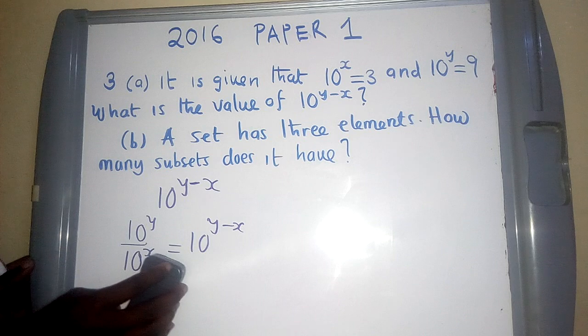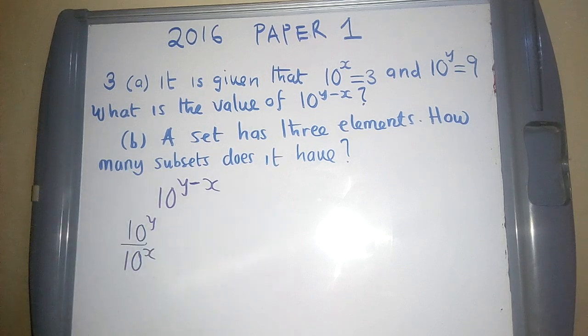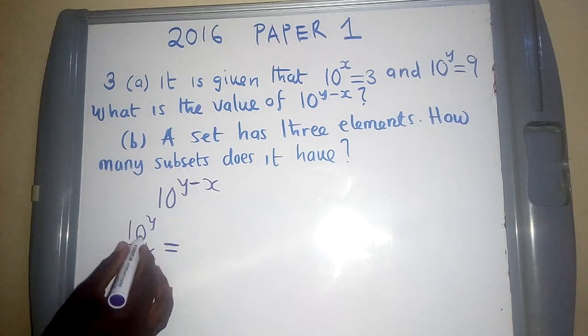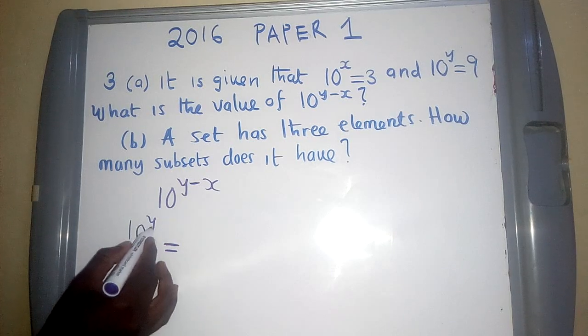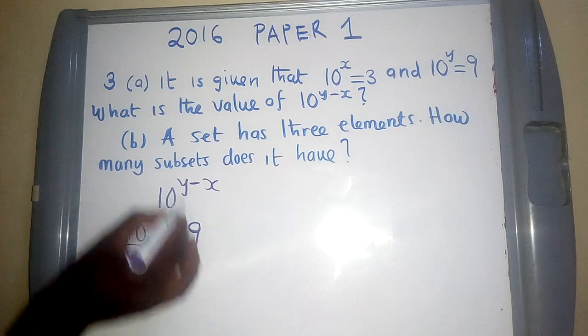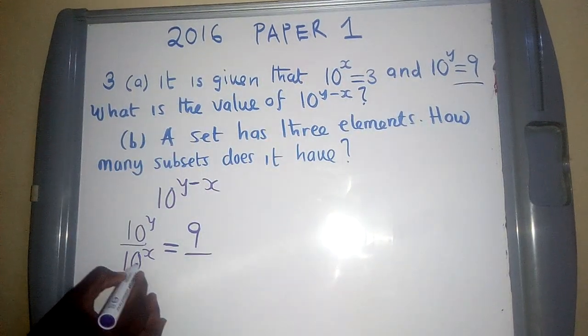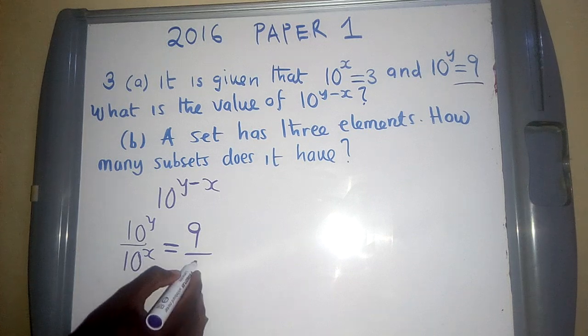So we maintain what we have down here. Okay, and then we will say it is equal to the value of this. They will say it is 9 over here. Okay, and the value of 10 to the power x is 3.